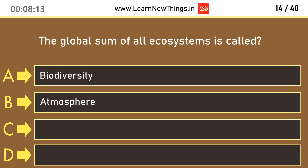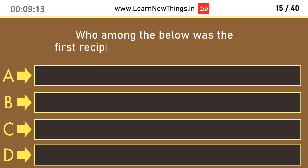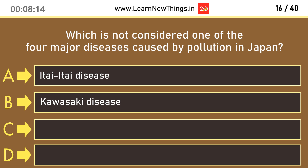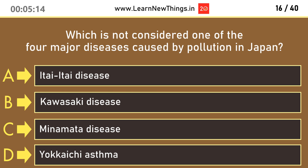The global sum of all ecosystems is called Biosphere. Who among the below was the first recipient of the Blue Planet Prize? Tsukuro Manabe. Which is not considered one of the four major diseases caused by pollution in Japan? Kawasaki Disease.